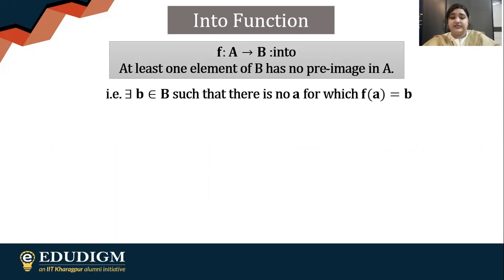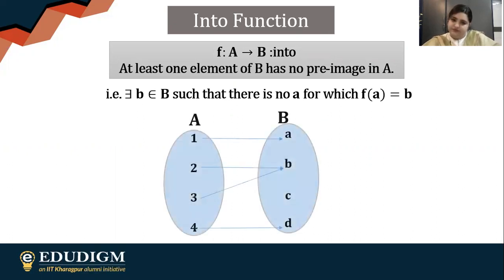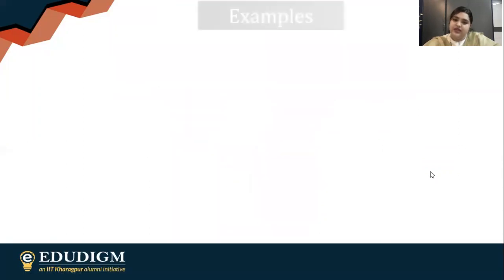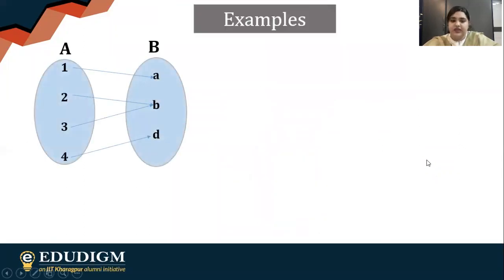Let's take an example. There exists b in capital B such that there's no a which is getting mapped to b. You can clearly see this particular element C—there's no such element which is getting mapped to C, so definitely it's an into function.